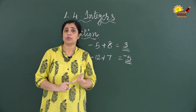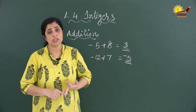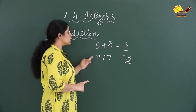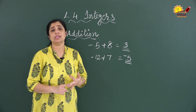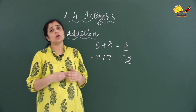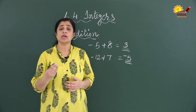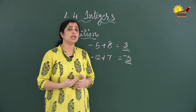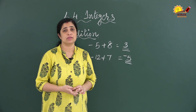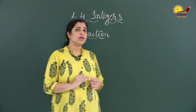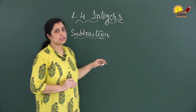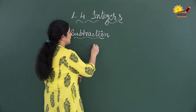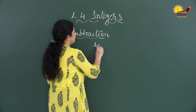So those are the three conditions for addition of integers: first, both numbers positive; second, both numbers negative; and third, one positive and one negative. Next, we are going to discuss the subtraction of integers. Before discussing subtraction, we have to discuss one term: additive inverse.